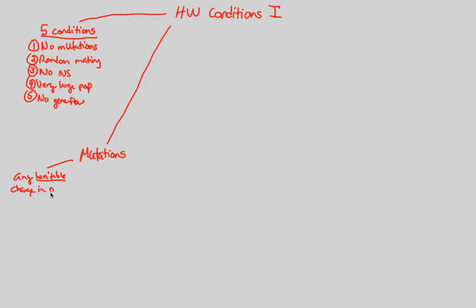This hereditable change — this mutation — by definition has to be unpredictable. So it has to be rather random. It also has to be permanent. So two sub-requirements are: unpredictable and permanent, and it has to be hereditable — a change in the DNA specifically.